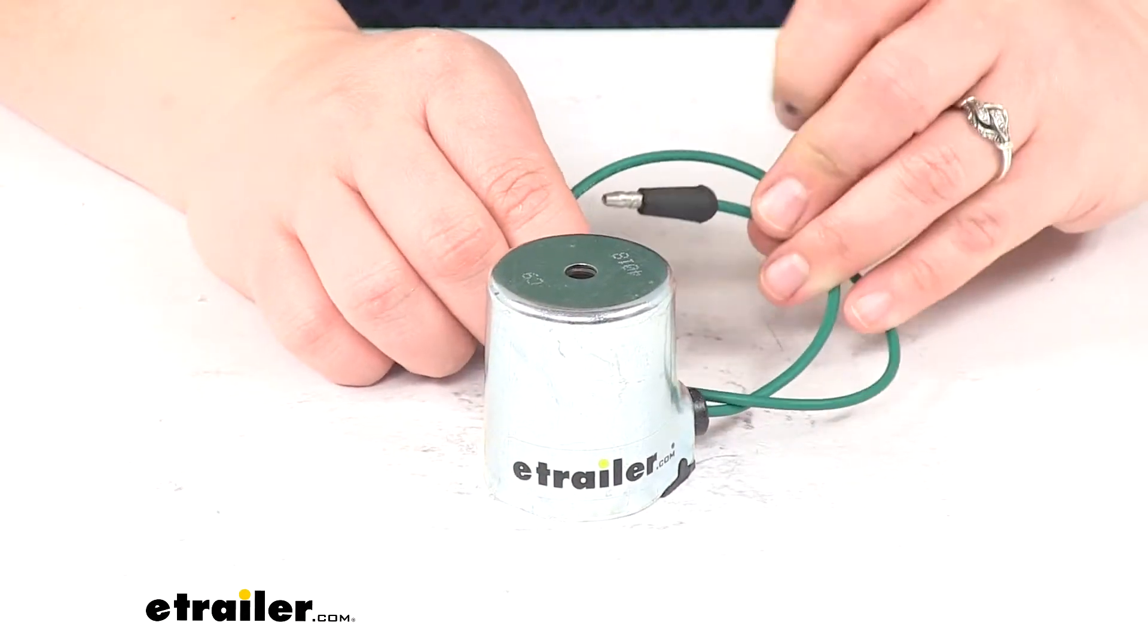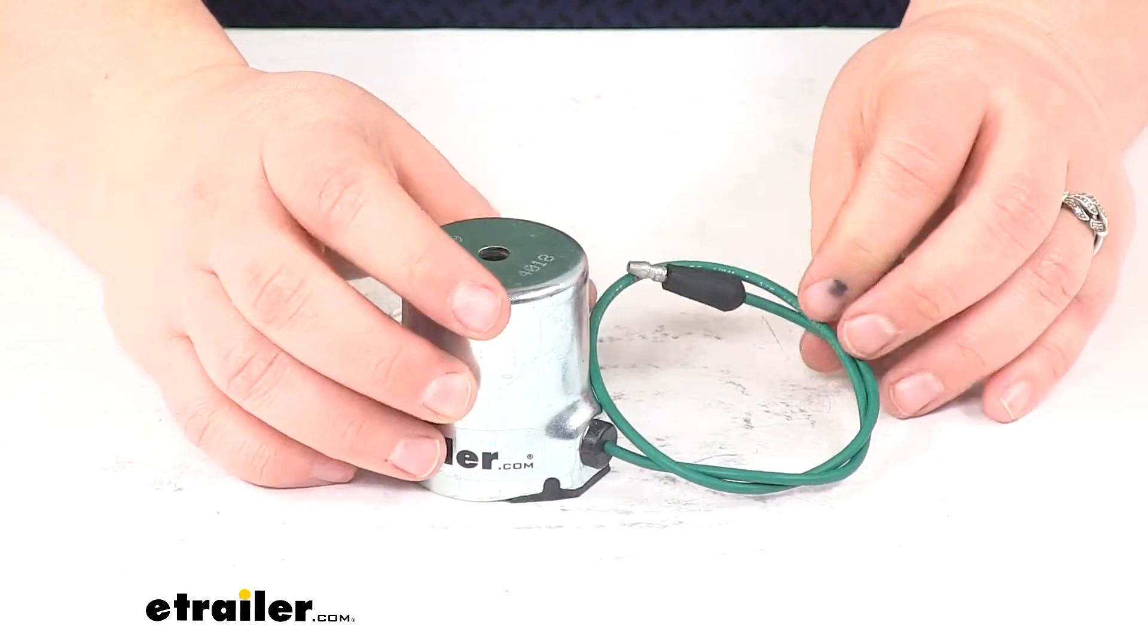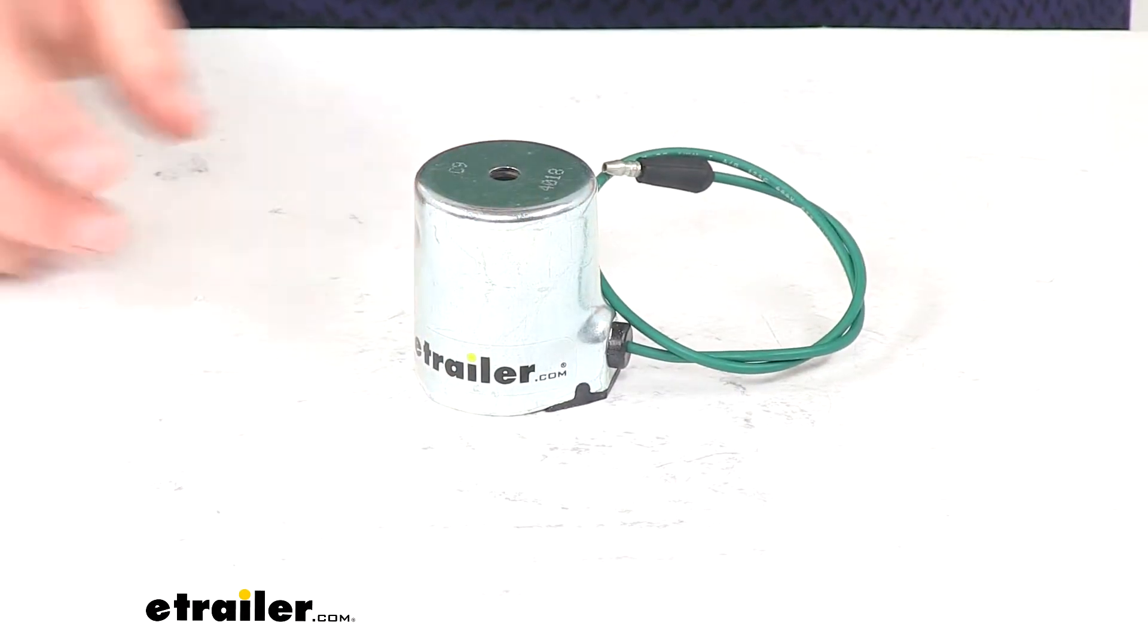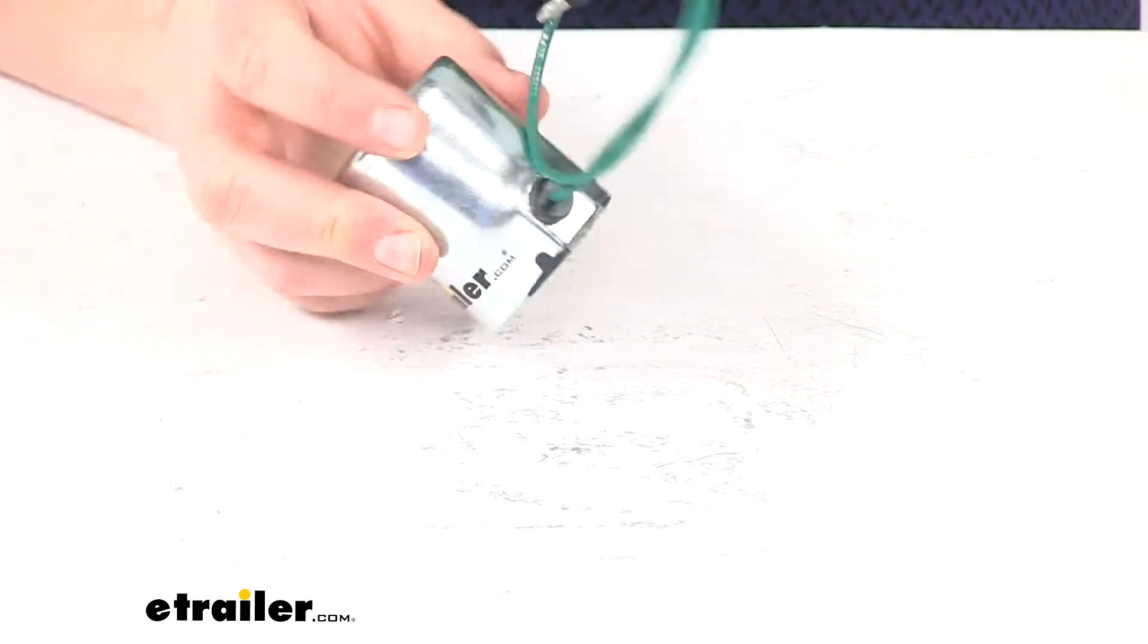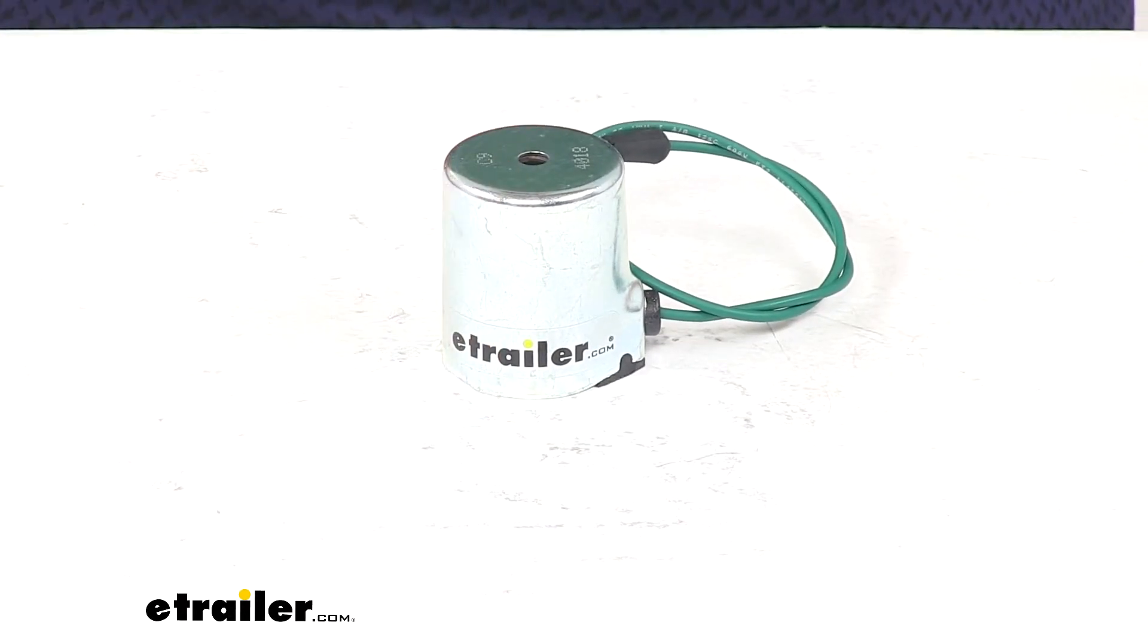It's going to be a direct replacement for your C solenoid coil. This product is also made in the USA and that's going to do it for our look at the replacement C solenoid coil four-way with five-eighths inch bore for Meyer snowplow.